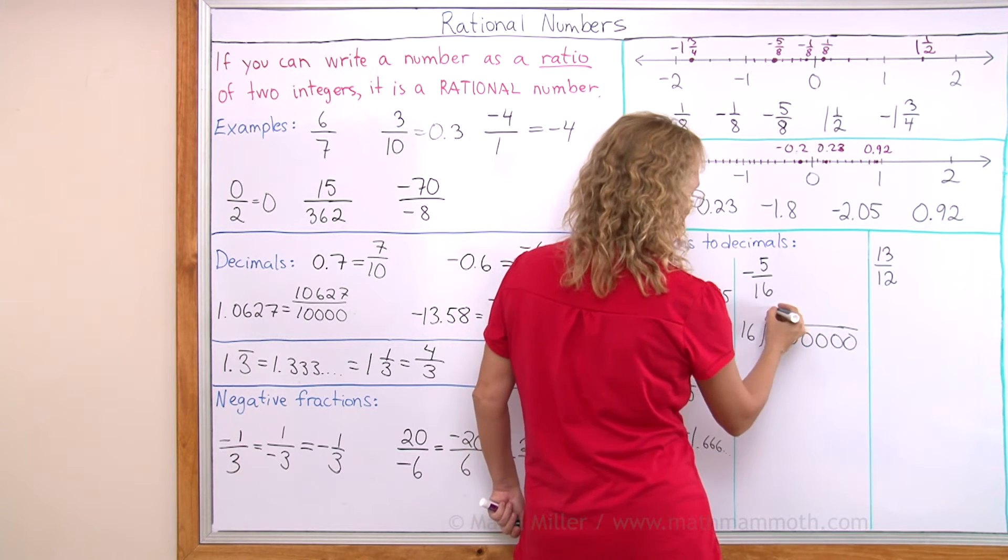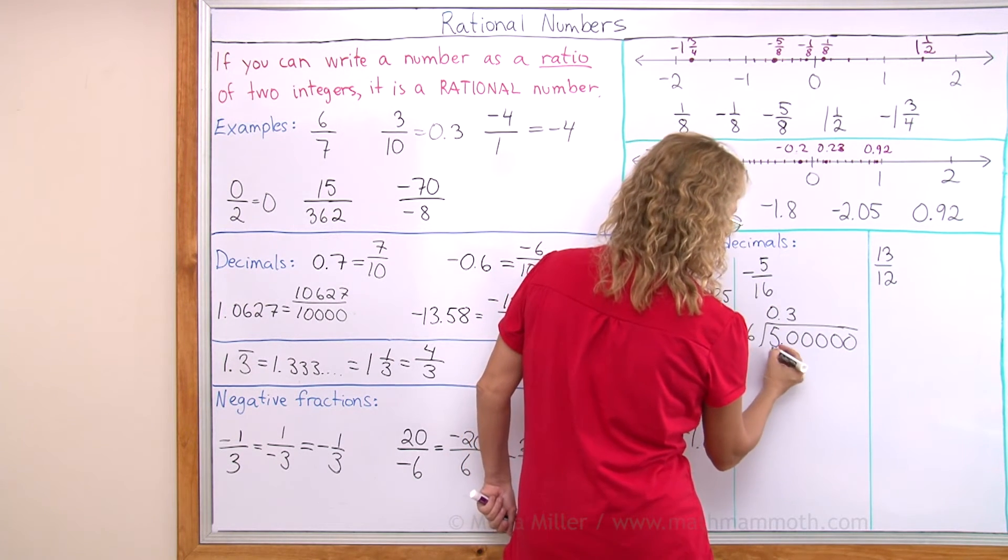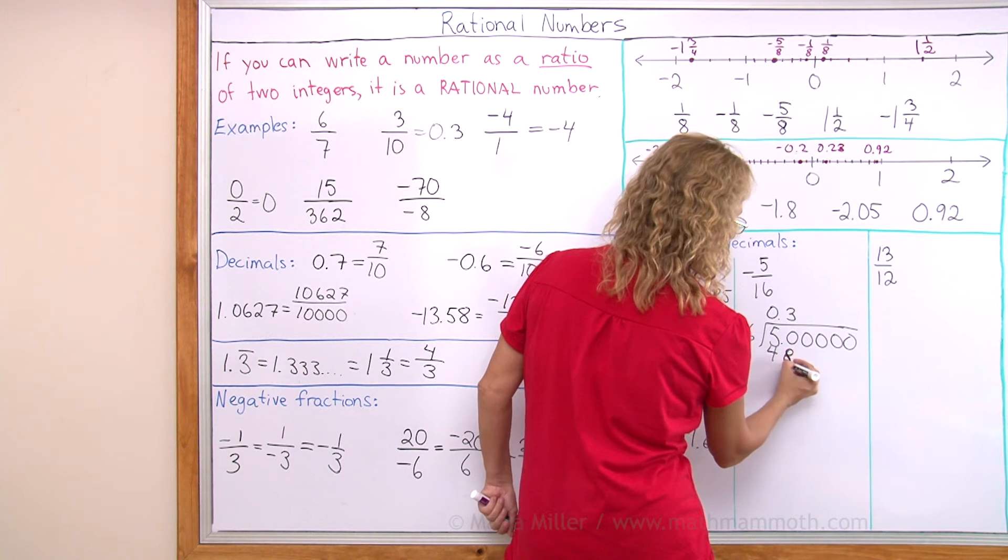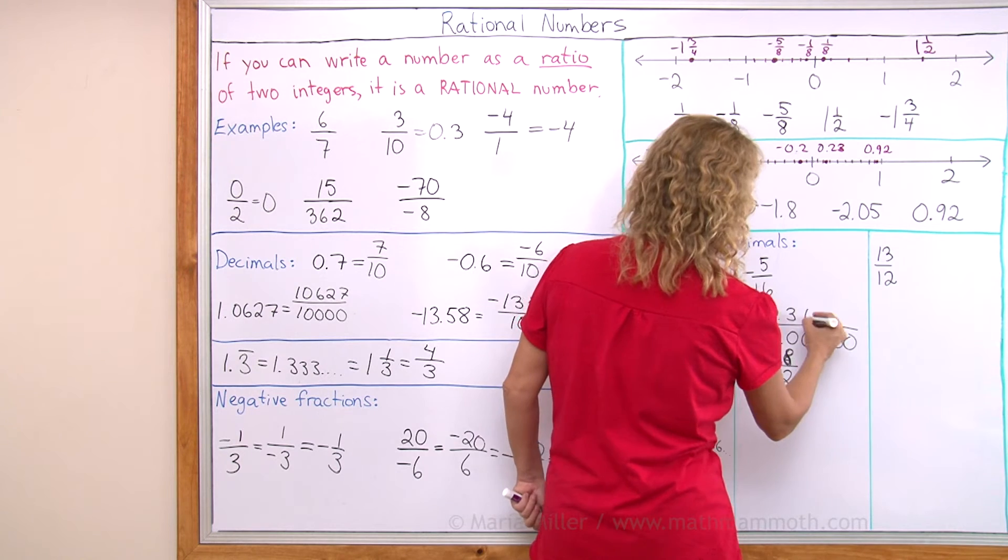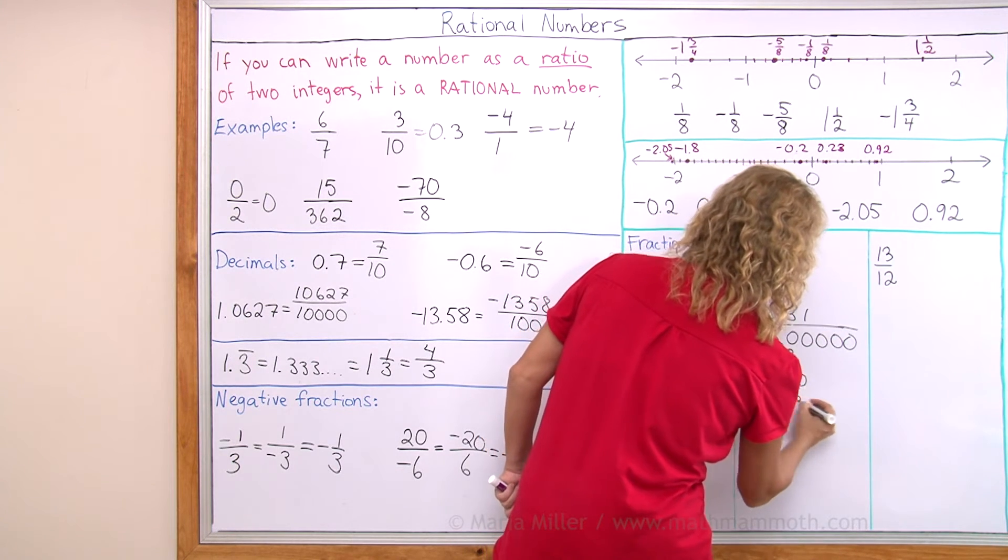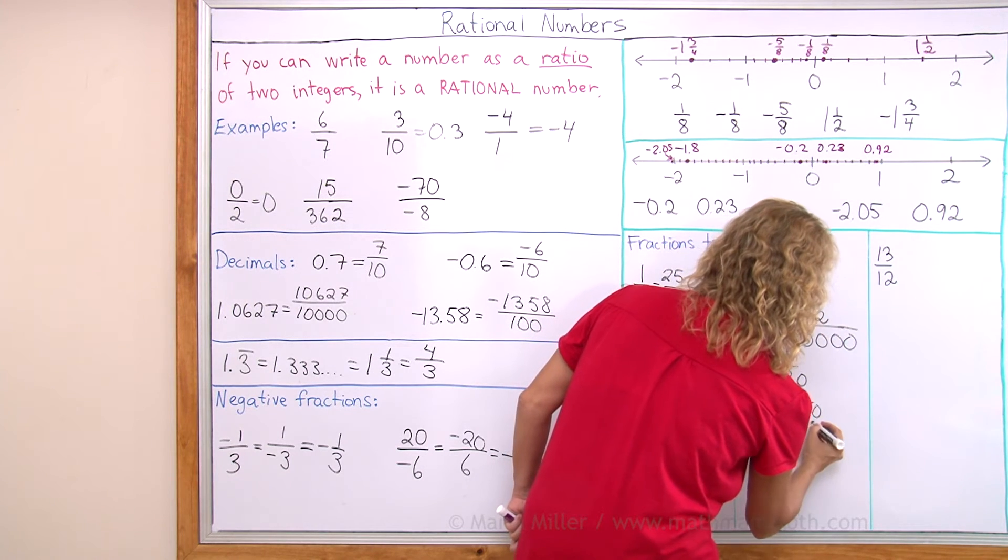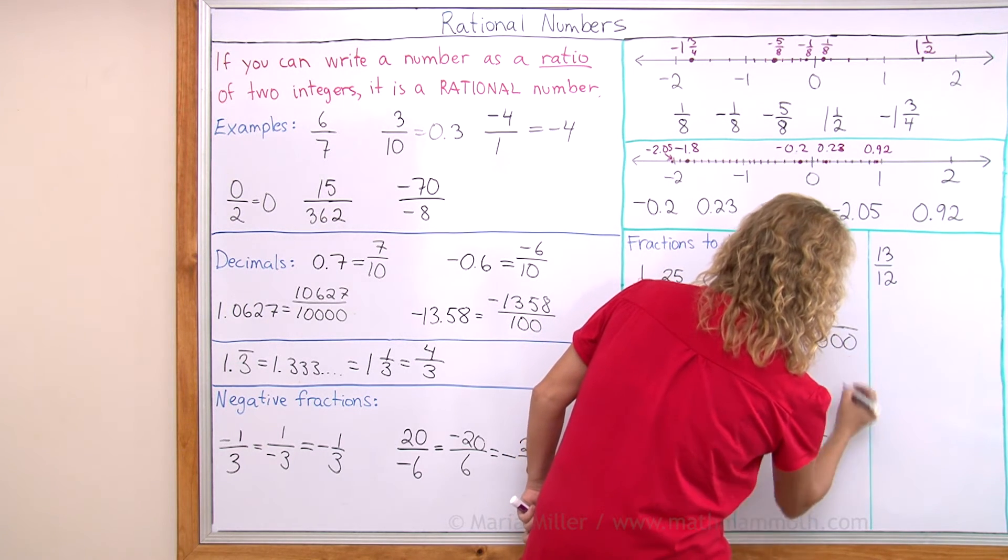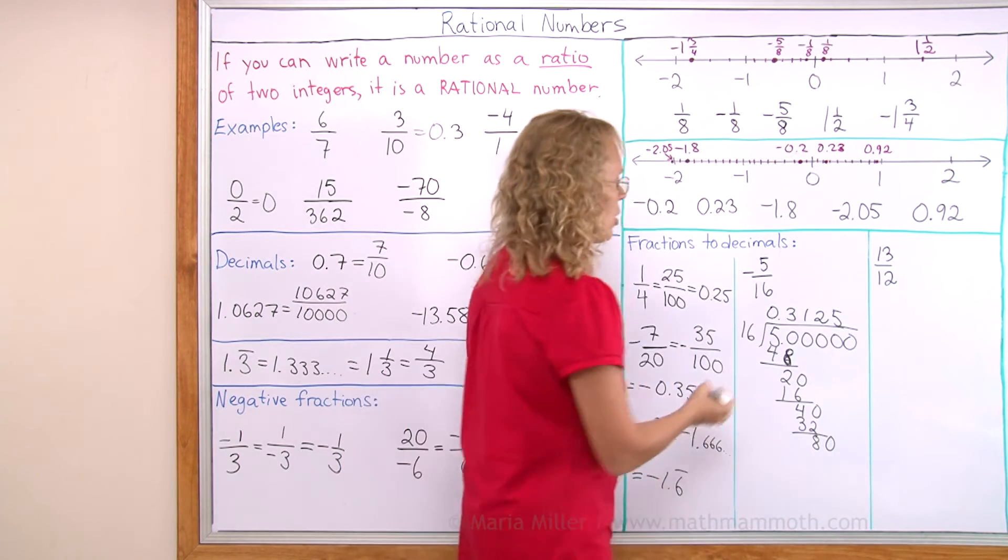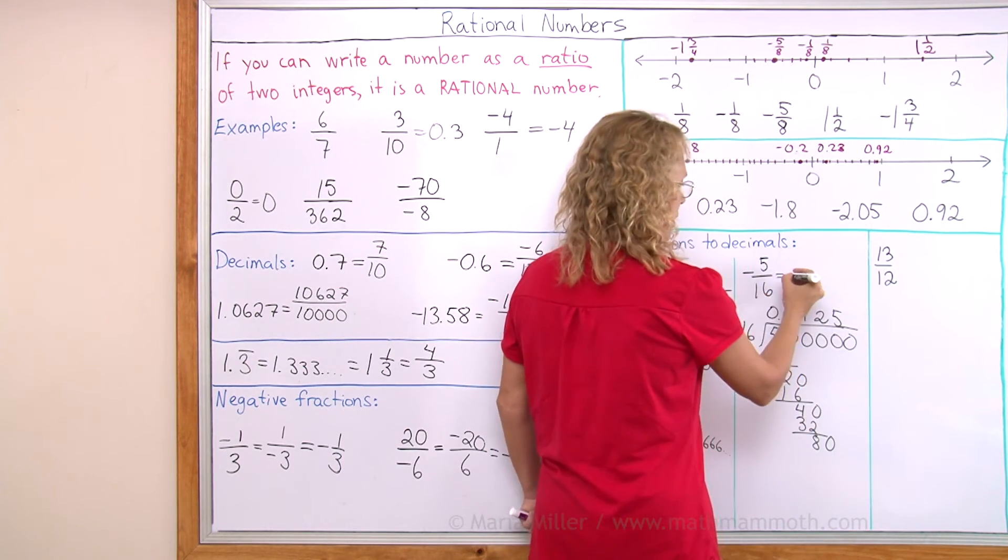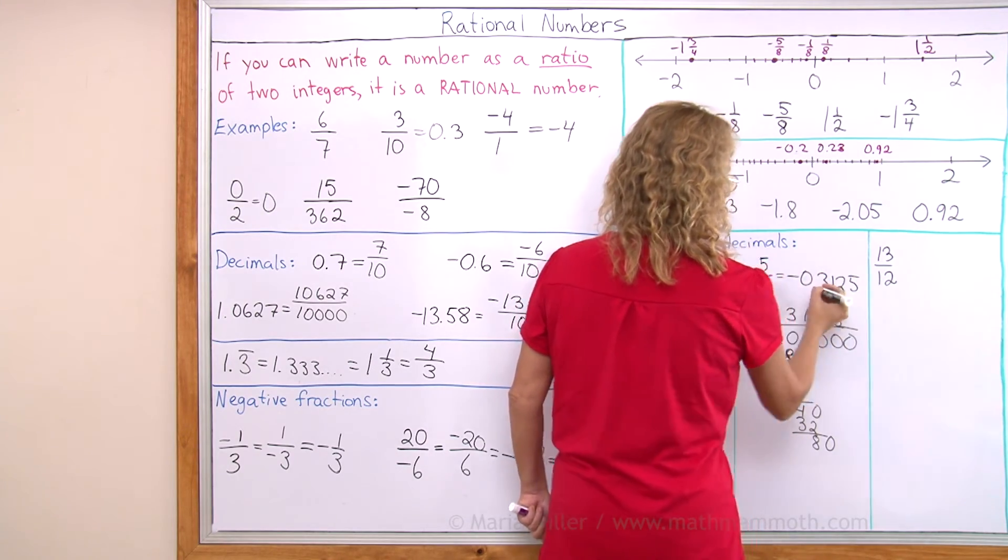And then 16 goes into 5, 0 times, and into 50, 3 times. I am sorry, 48 here. Okay, we get 20. It goes once. Then we get 40, it goes 2 times. And then we get 80, it goes evenly. 5 times 16 is 80. So this is just a negative decimal number. There it is.